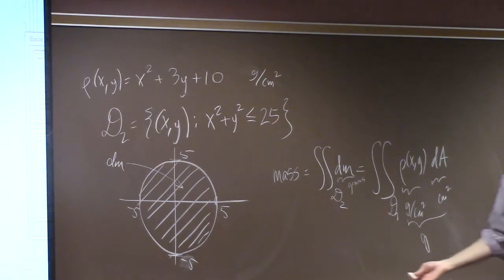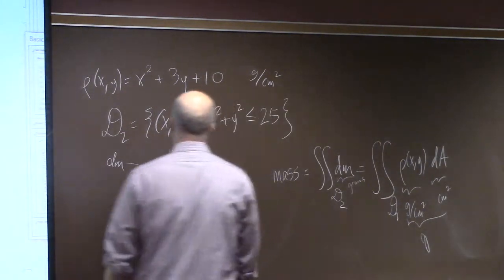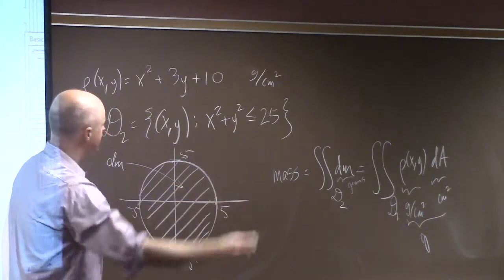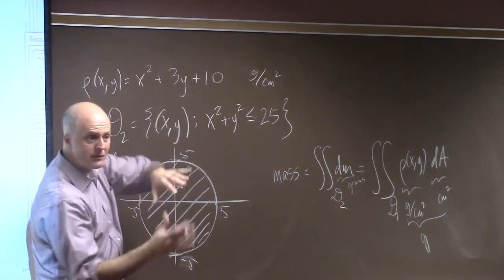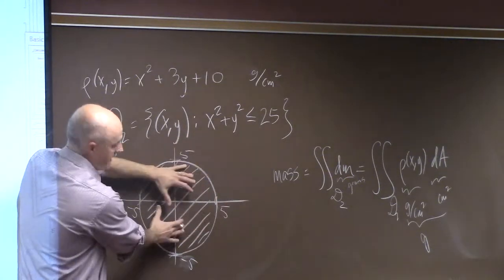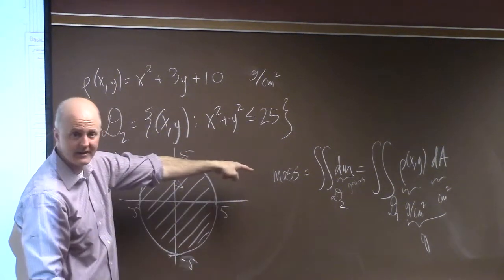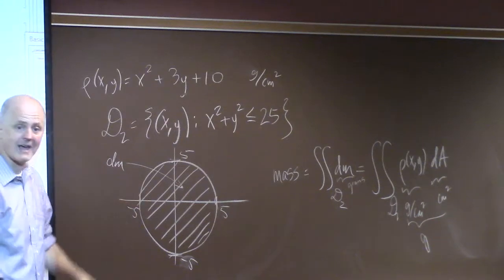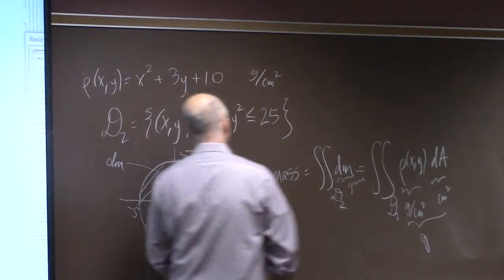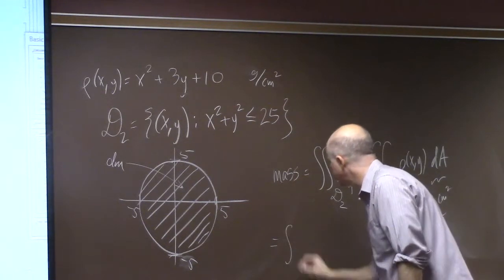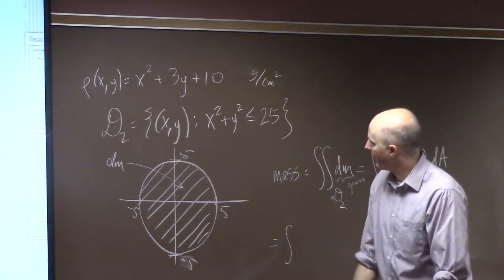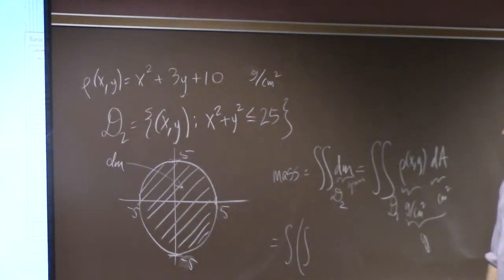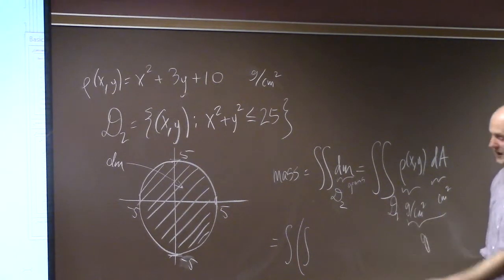This can also be thought of as a volume: graph the density function in 3D with a z-axis, and the integral equals the volume of the solid created by projecting that graph down onto the domain. To calculate it, we think of this as an iterated integral — an inner integral and an outer integral. dA can be imagined as dx times dy, an infinitesimally small rectangle.